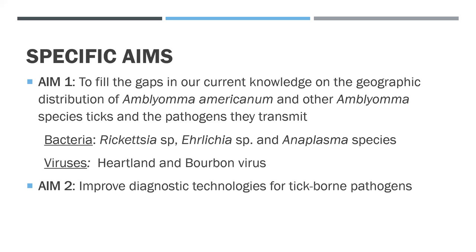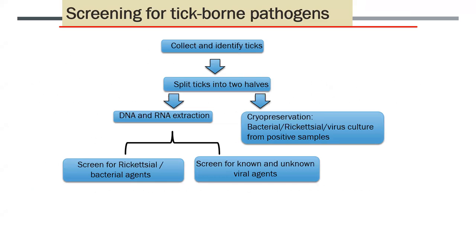For our recipe for looking for ticks and tick-borne pathogens, we would collect and identify ticks, split ticks into two halves. On one half, we would do both RNA and DNA extraction to look for the rickettsial bacterial agents, and with the RNA, we would look for known and unknown viral agents. We would also preserve half the tick to be able to culture rickettsial and virus samples from the positives.